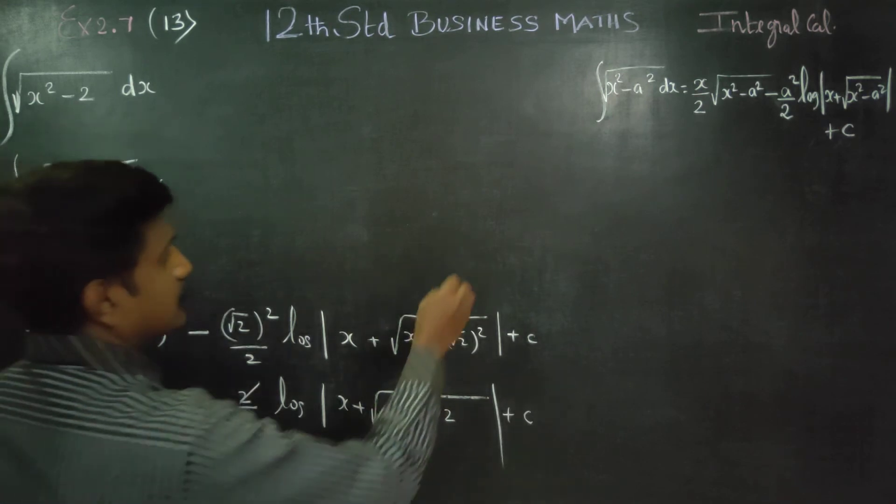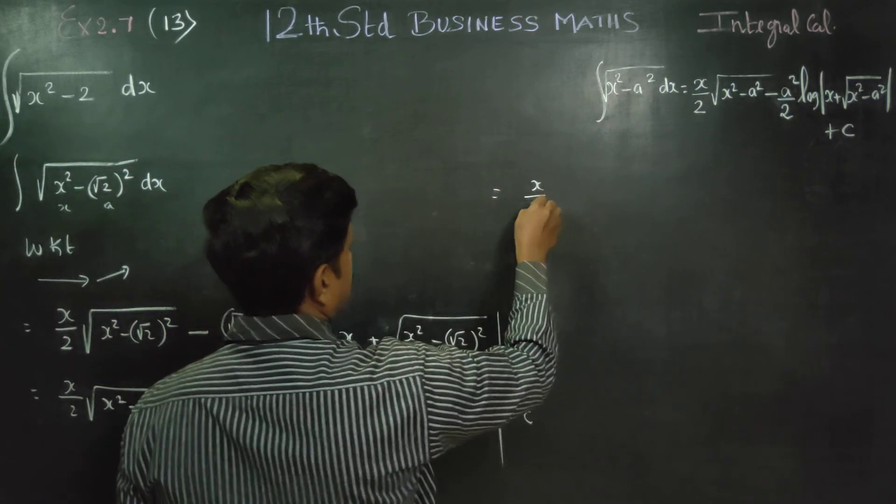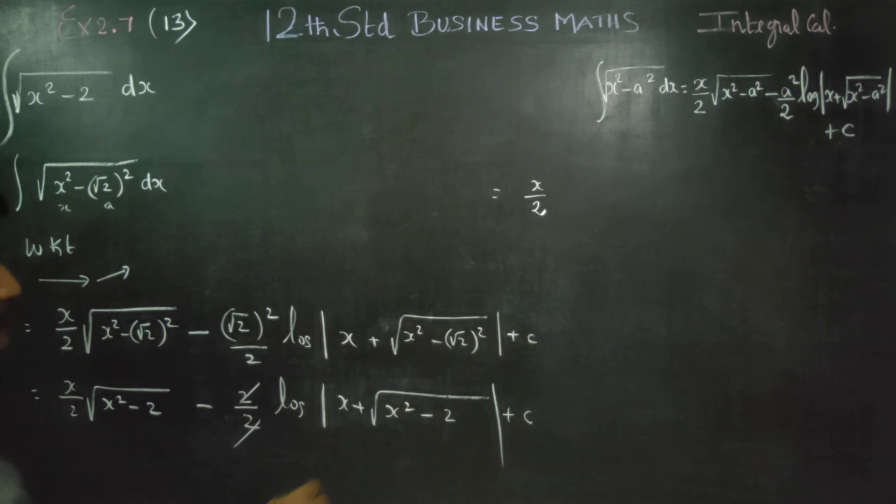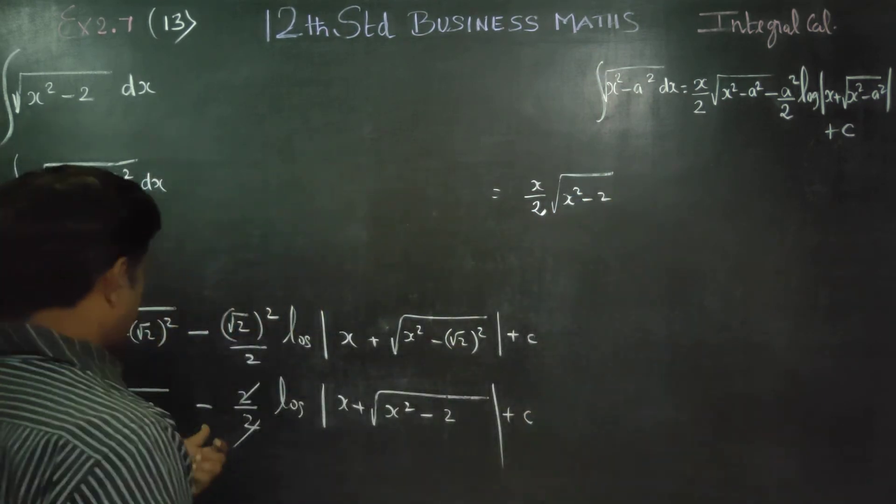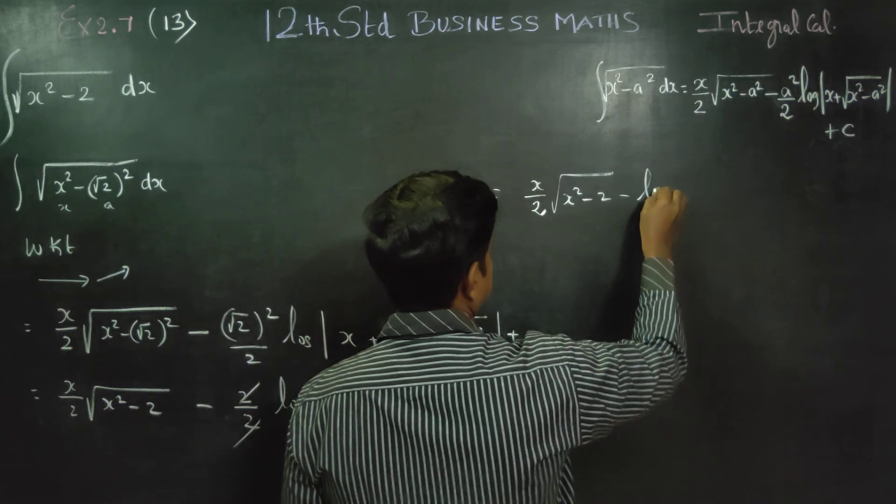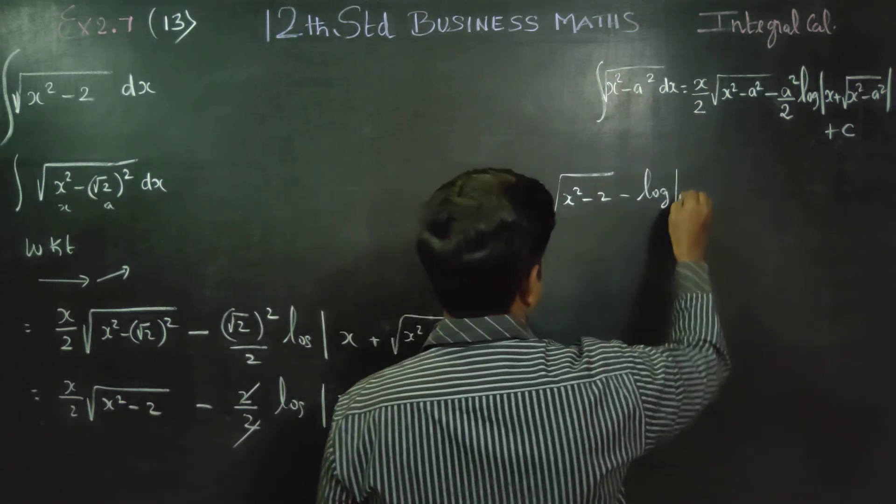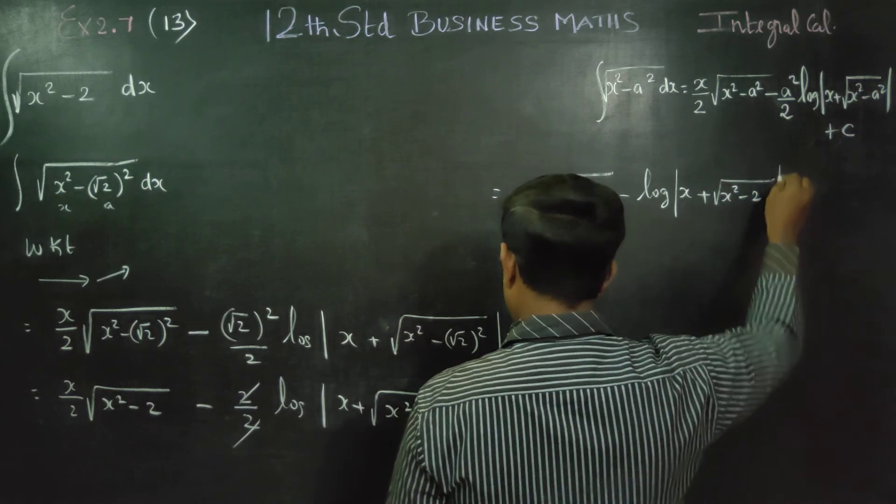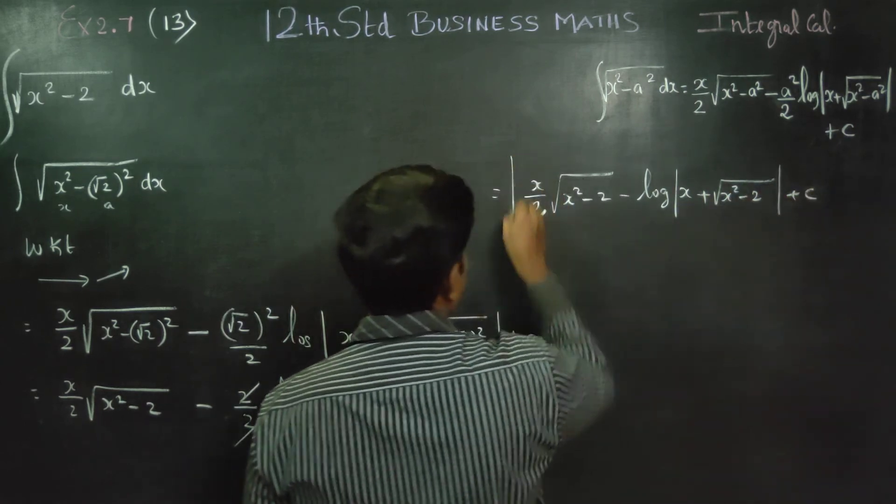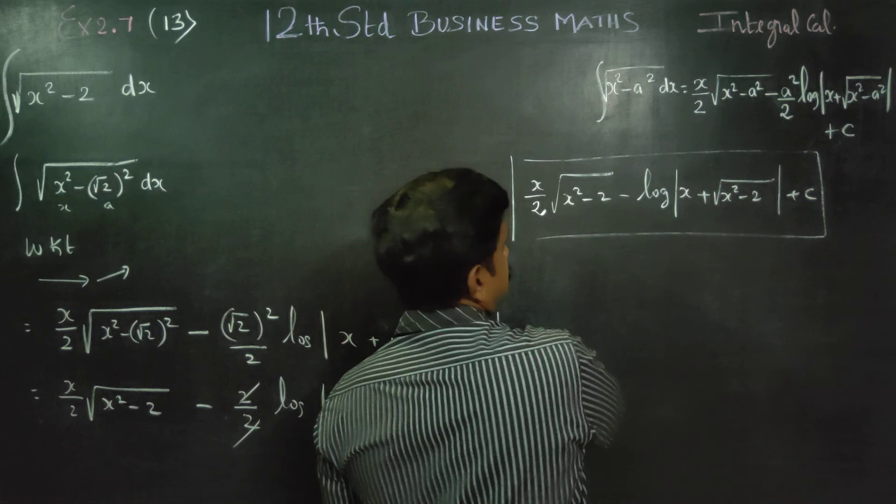2 and 2 cancel. The final answer will be x by 2 square root of x square minus 2 minus logarithm of x plus root of x square minus 2 plus c will be our final answer.